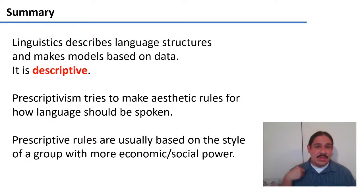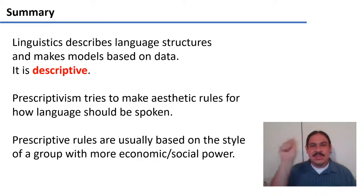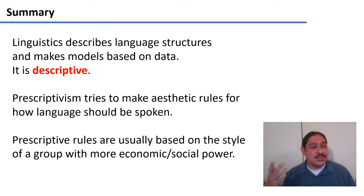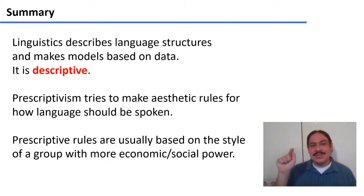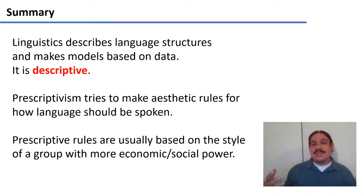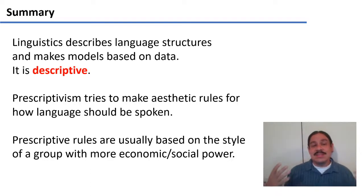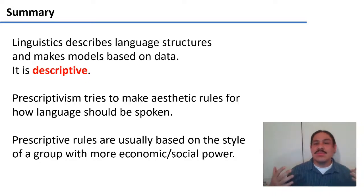In summary, what we're going to be doing in this class is describing language and trying to figure out descriptive rules to make models of how language works. But we're also going to be paying close attention to prescriptivism — rules like the apostrophes for 'there/their/they're' or double negatives — which are really aesthetic rules. They don't affect whether you're understood or not, but they do affect how other people perceive others, and they're usually based on styles of groups of people who have more economic or social power. That is prescriptivism. That is not what we do. We describe language.